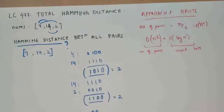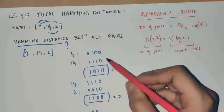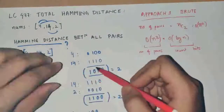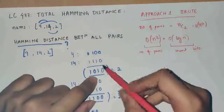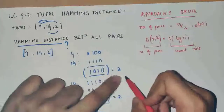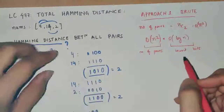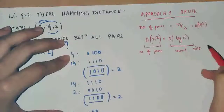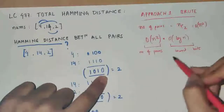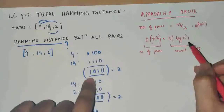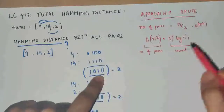The first approach we can try is basically a simulation. We find all pairs — that's O(n²) — and then we find the XOR of those two numbers, which is an O(1) operation. Then we count the number of bits in that XOR, which is an O(log n) operation because we need to go through each and every bit. So the overall bit operation is O(log n).